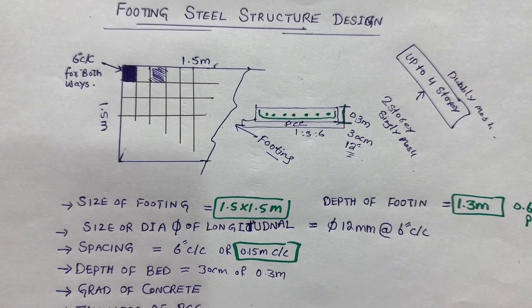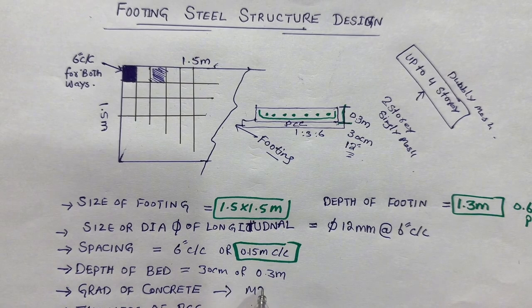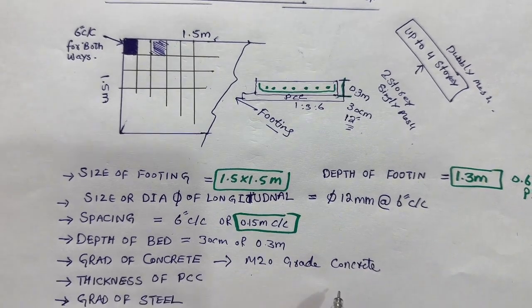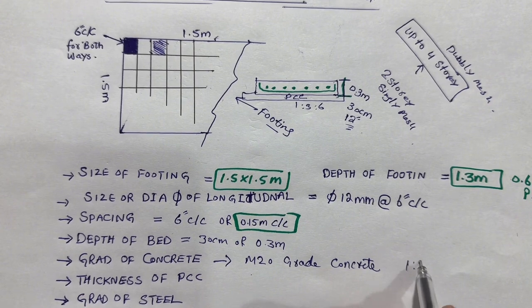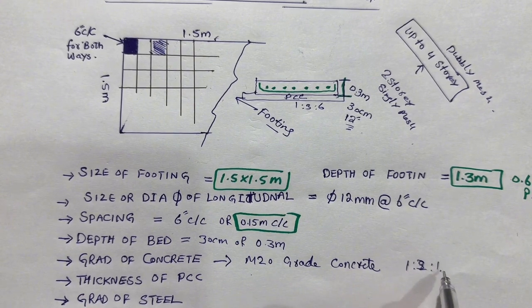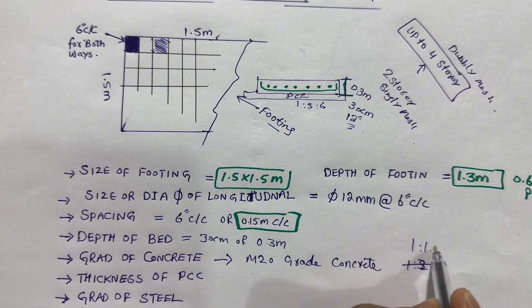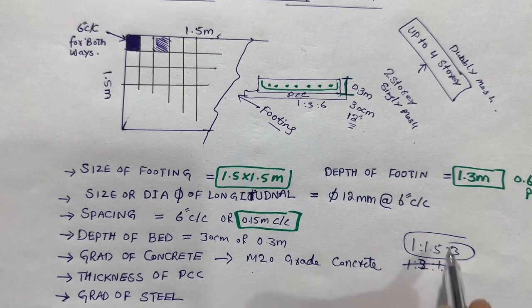Next, the grade of concrete. Use M20 grade of concrete for normal residential building up to 4 storey. The mix ratio for M20 is 1:1.5:3.